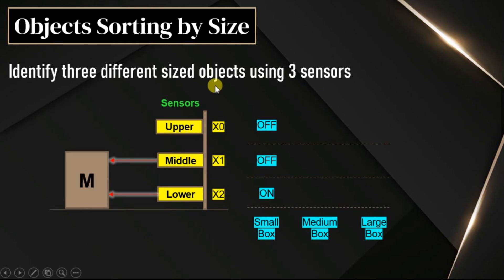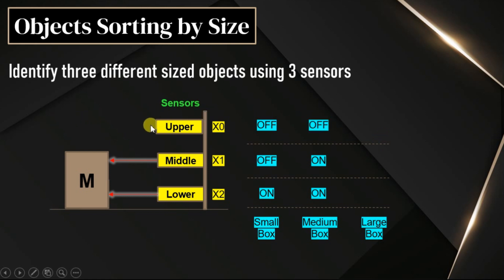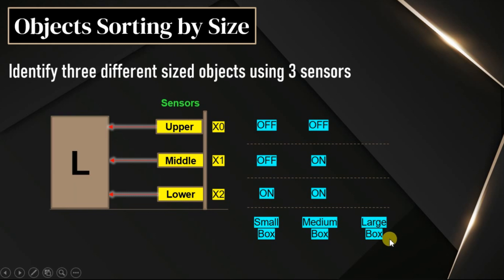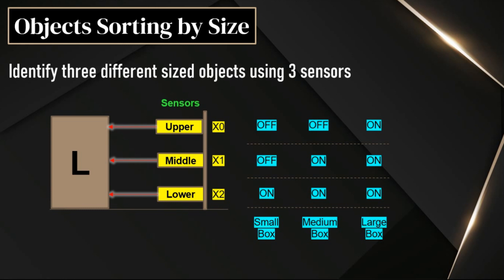Similarly, if there is a medium size box, two sensors are in front of the box: the lower sensor and middle sensor. That means for a medium box, the lower sensor output is on and the middle sensor output is on. The upper sensor is off because there is no box before it. When there is a large box, all three sensors — lower, middle, and upper — output on. By using this pattern, we can identify the box.